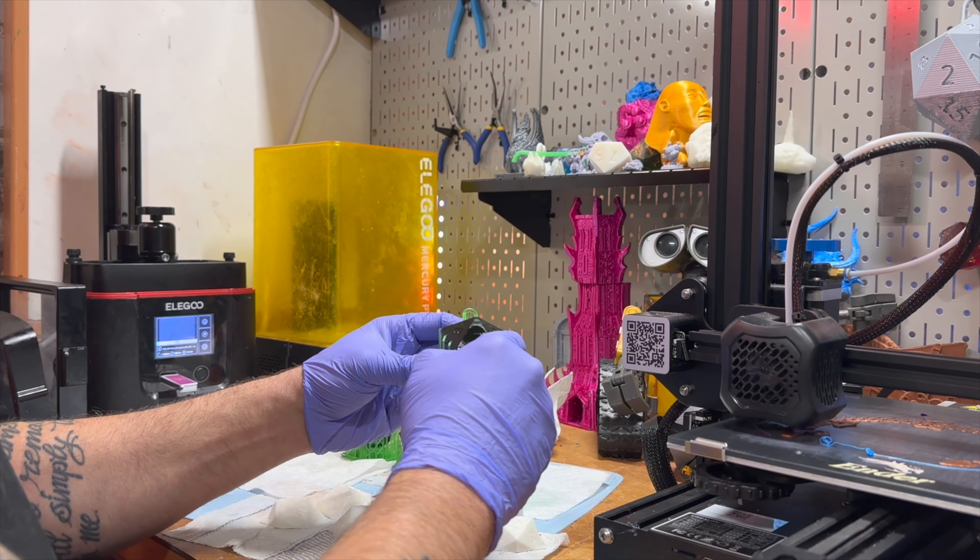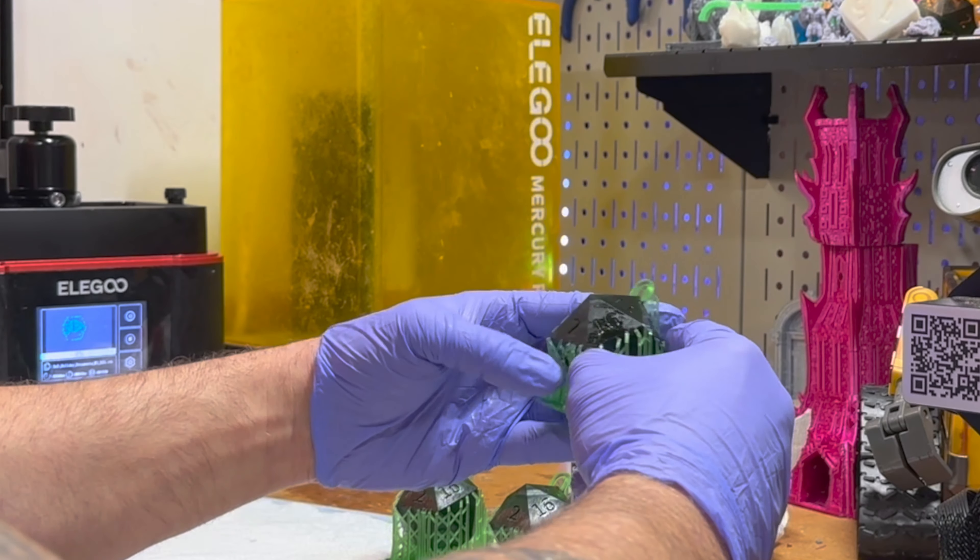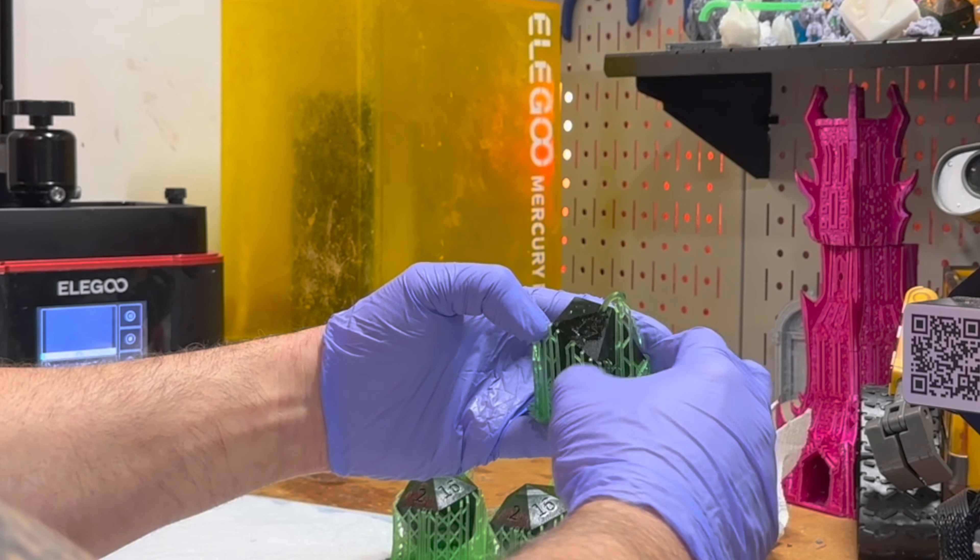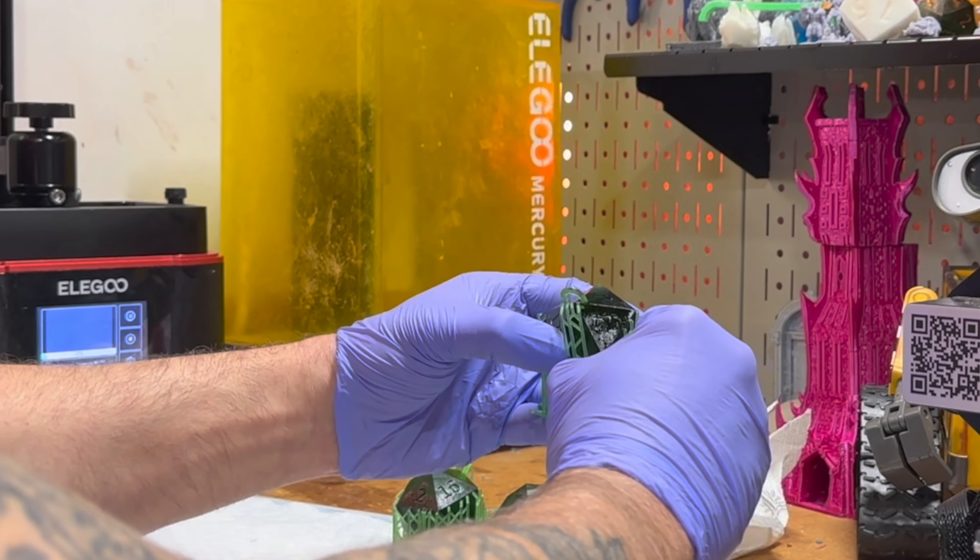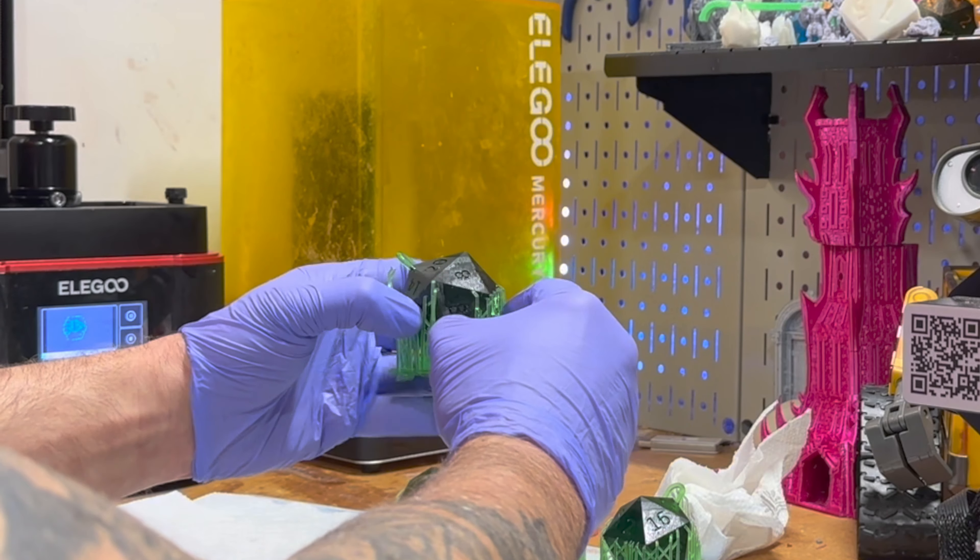First thing I do is I remove the supports. I break them away. Some people soak them in water, you could do that. On this model, I definitely don't need to do that because of the way this model is designed. They break away pretty easily.